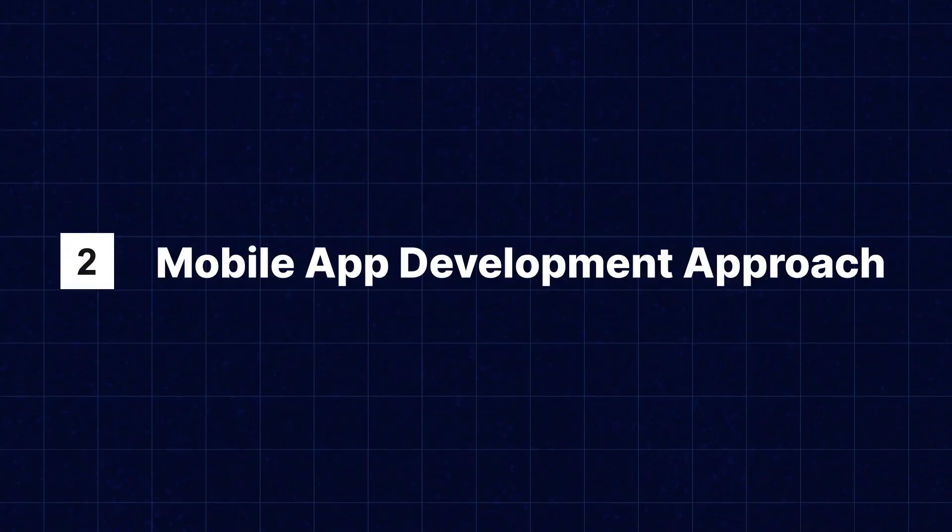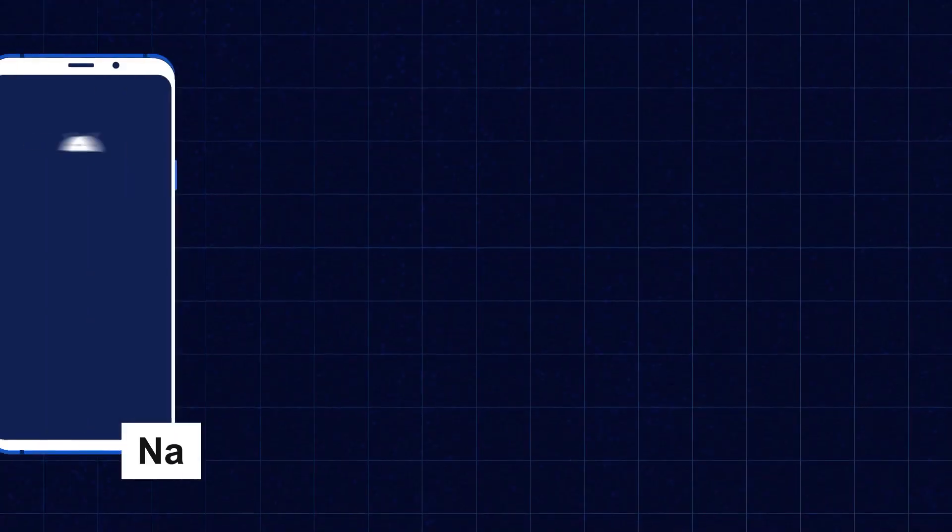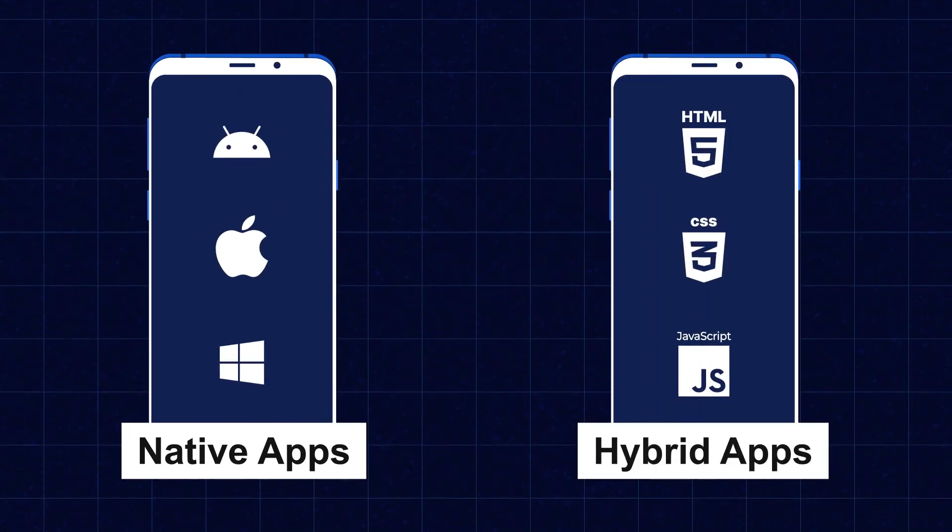Step two: Choose a mobile app development approach. Next, you need to choose an approach for developing your mobile app. You can go for either a native or a hybrid app — built specifically for a particular platform like iOS or Android, or opt for cross-platform development frameworks like React Native or Flutter, which allow you to create an app that works on multiple platforms.